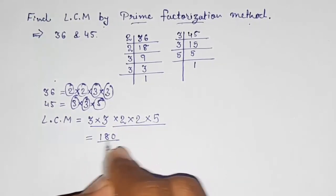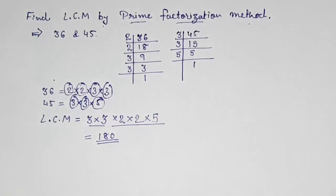So the LCM of these two numbers will be 180. So this way we can find out the LCM by prime factorization method. Thank you so much for watching my video. If you like it, please subscribe to my channel. Thank you.